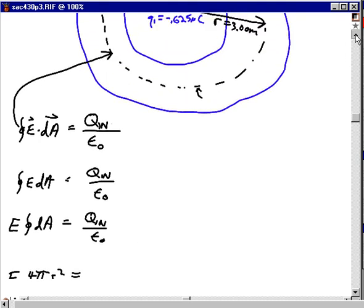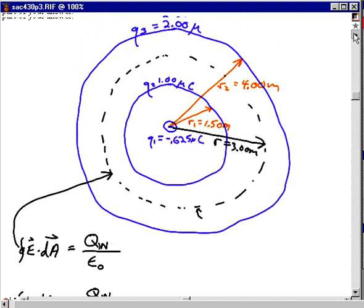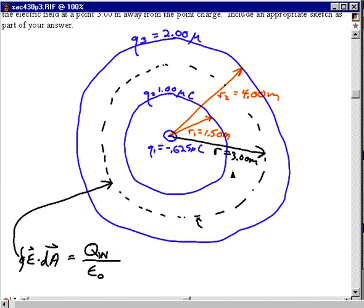And the charge enclosed, charge inside that Gaussian sphere, is going to be q1 plus, call that q, I think I'll call that, well that's q2 actually. Anyway, and left off the equal sign.